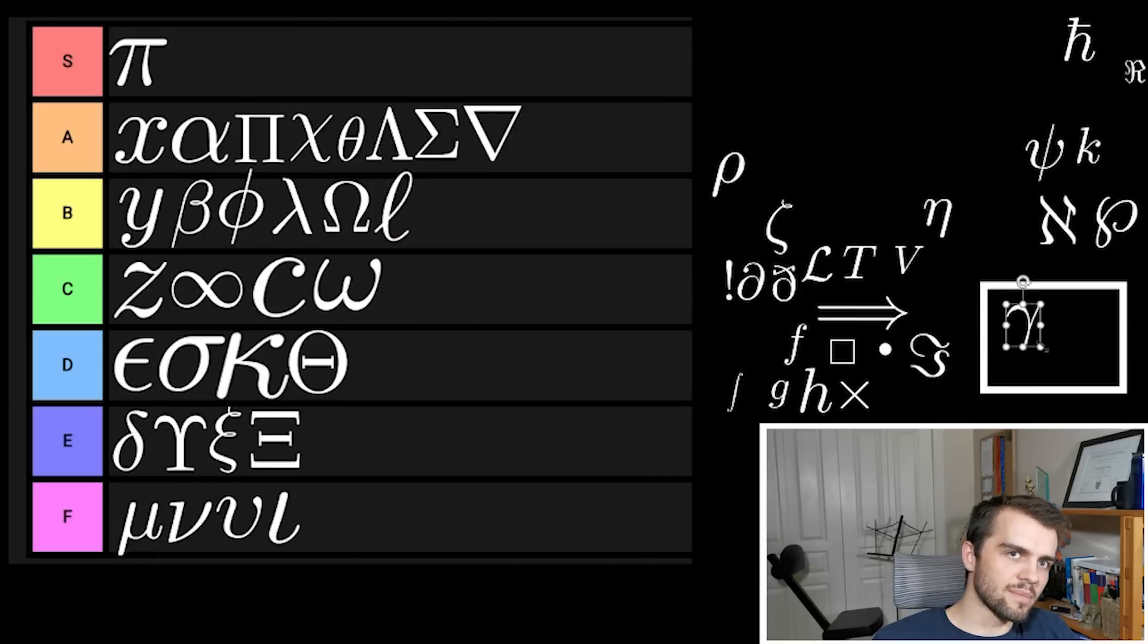Gamma is an interesting symbol and I don't like the way it shows up in LaTeX here. Not the nicest. I like the little loop in it. Not a huge fan of this particular gamma. I think this is about a B tier symbol.